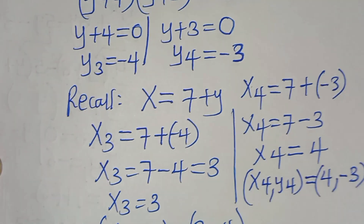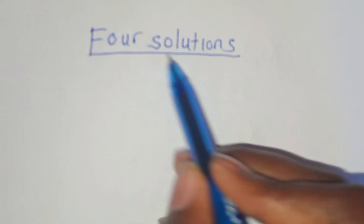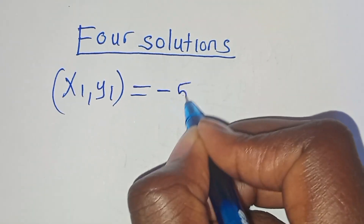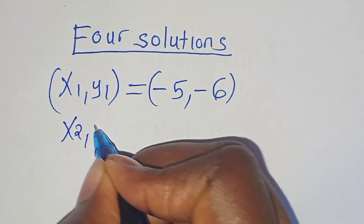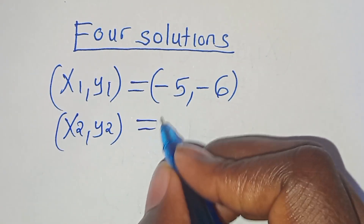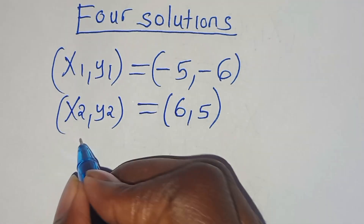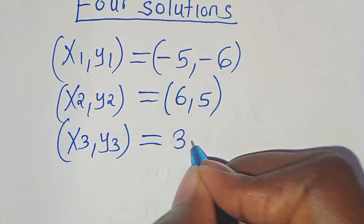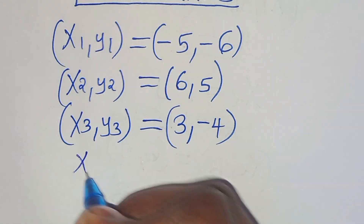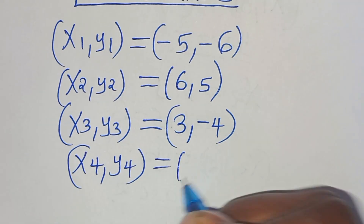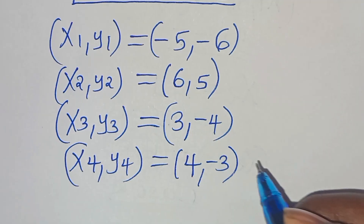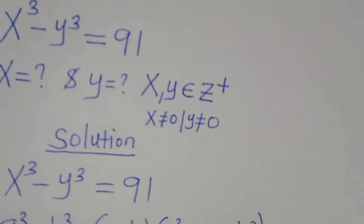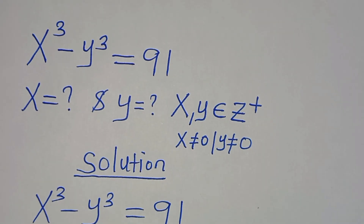So we have four sets of solutions: (x₁, y₁) = (−5, −6); (x₂, y₂) = (6, 5); (x₃, y₃) = (3, −4); (x₄, y₄) = (4, −3). These are the solution sets for this algebra problem. Can you follow the steps? Like this video and subscribe. See you in the next video.